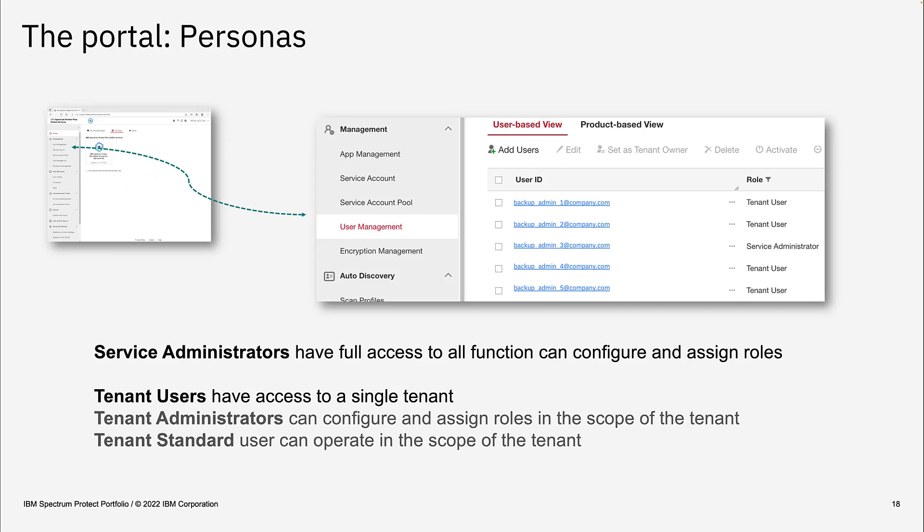The next area is personas. Spectrum Protect Plus Online Services knows three different types of users or personas. There is the service administrator, who has access to everything and can configure everything in the portal — a global admin who can do anything and add other users and assign roles.